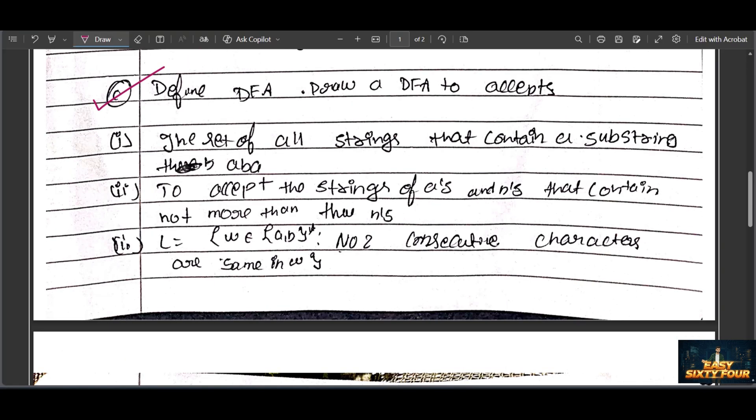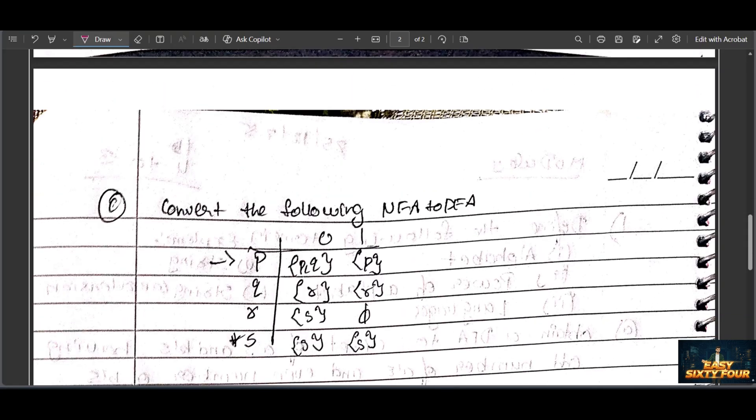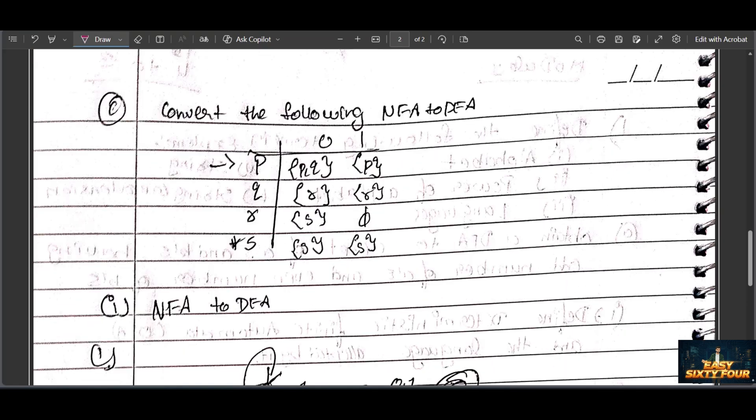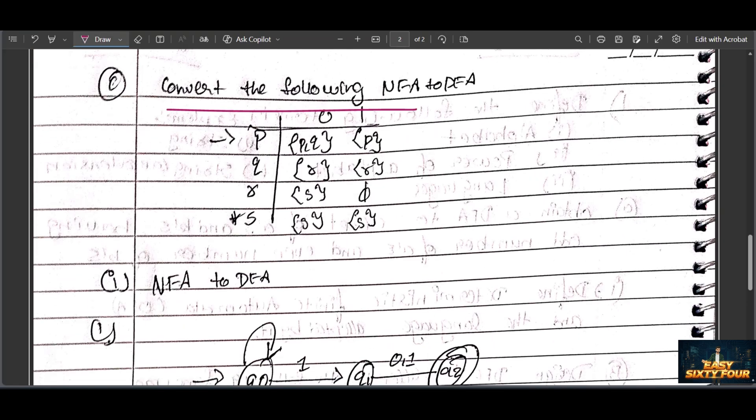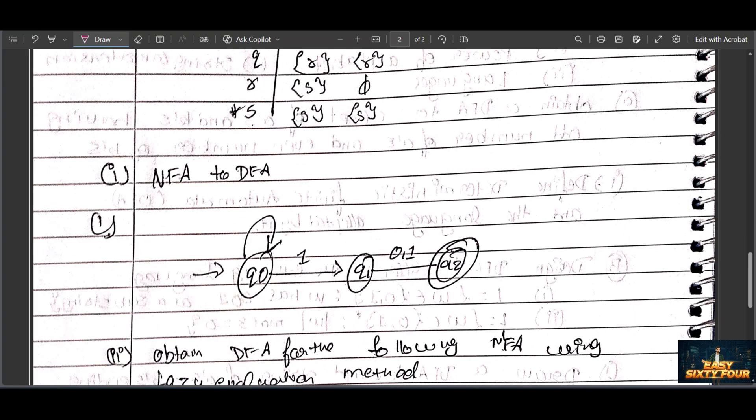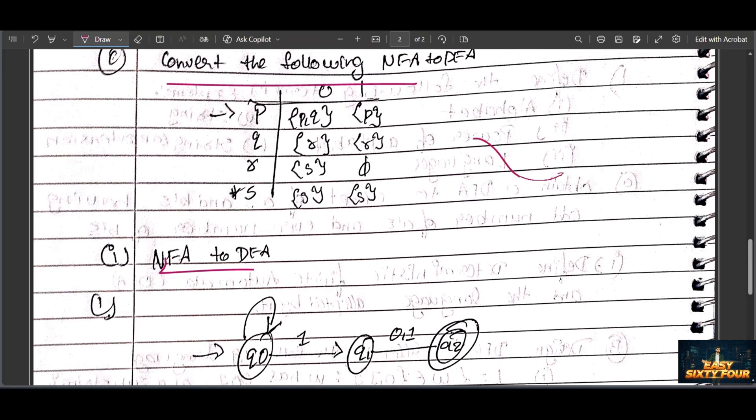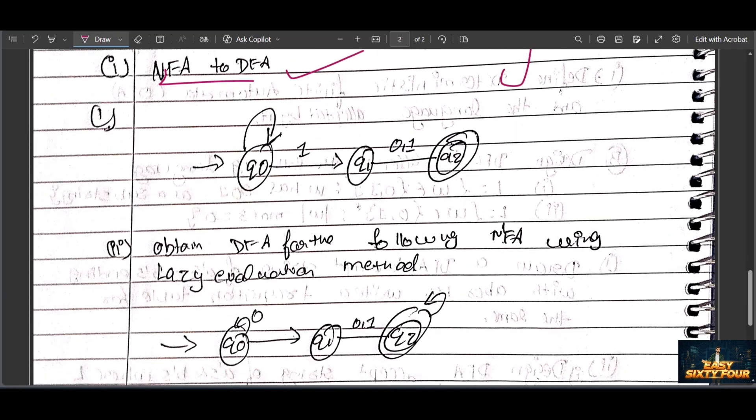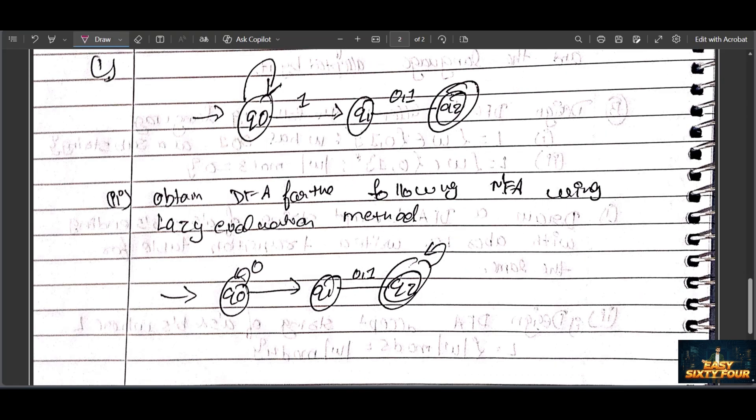Convert the following NFA into DFA - the easiest question in this topic because this is the backbone of this model. NFA into DFA - in these two questions, I think one question may come. This question will likely come in the paper because the other two papers are more tough. I think this paper will be easy.